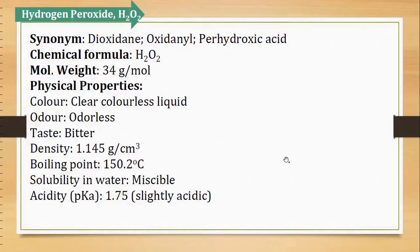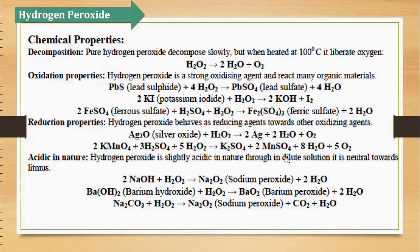Then come the chemical properties of hydrogen peroxide. Hydrogen peroxide gives a decomposition reaction. Jab hum hydrogen peroxide ko heat karte hain at 100 degree centigrade, it gives water and oxygen. H₂O₂ ko heat kiya, it gives water and oxygen.